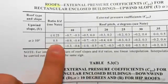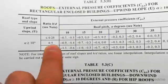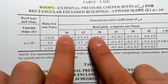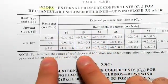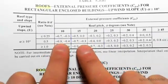This means that we are 0.5 for h and d. Now our roof pitch is 14 degrees, so there's 10 and 15, and it says for intermediate values we're going to have to use linear interpolation.